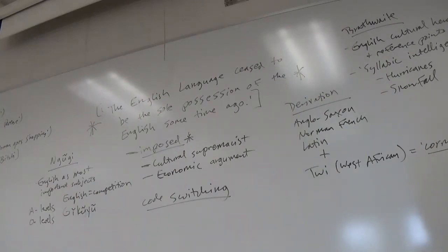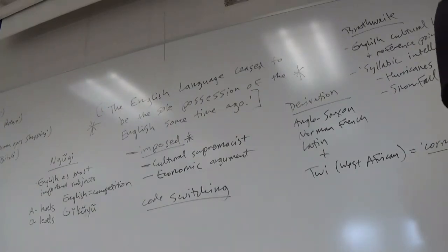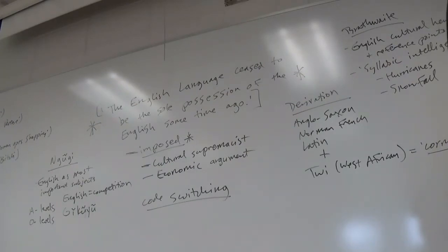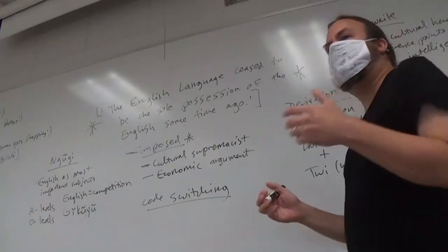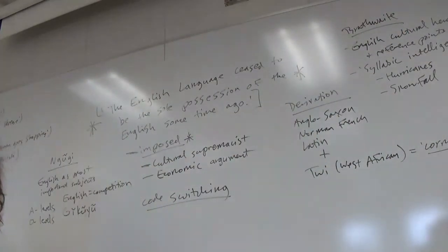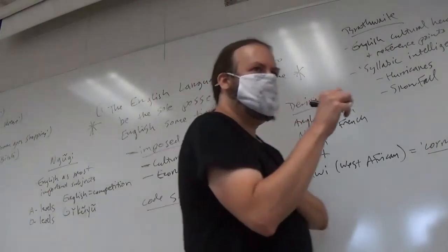Thus one of the most humiliating experiences was to be caught speaking Gikuyu in the vicinity of the school. The culprit received corporal punishment, three to five strokes of the cane on the bare buttocks, or was made to carry a metal plate around the neck with inscriptions such as 'I am stupid' or 'I am a donkey.' Sometimes the culprits were fined money they could hardly afford. And how did the teachers catch the culprits? A button was initially given to one pupil who was supposed to hand it over to whoever was caught speaking his mother tongue. Whoever had the button at the end of the day would sing who had given it to him and the ensuing process would bring out all the culprits of the day.